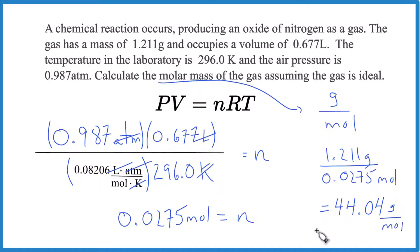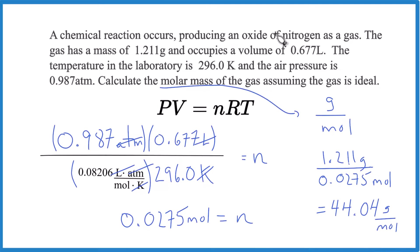If you wanted to figure the identity of the gas, you could look at the different oxides of nitrogen, like NO2, or N2O, or NO, and figure out which one of these here has a molar mass of very close to 44.04 grams per mole. That would be the gas.